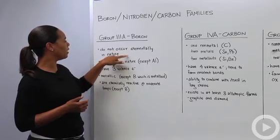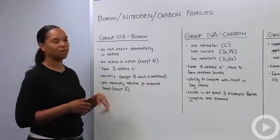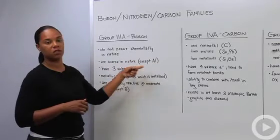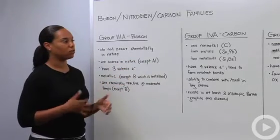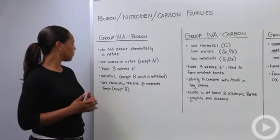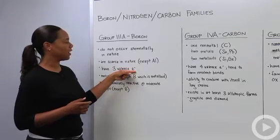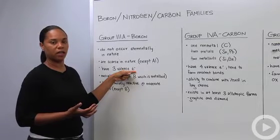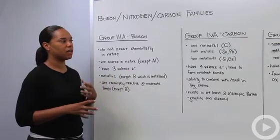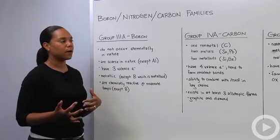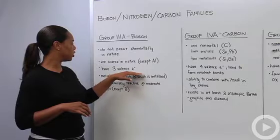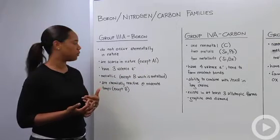For boron, these do not occur elementally in nature and they're pretty scarce except for aluminum, which is one of the most abundant metals in our universe. These guys in the boron family have three valence electrons. Remember from your understanding of electron configurations and reactivities what that says about how it interacts with other elements and polyatomics and what it means for its reactivity.